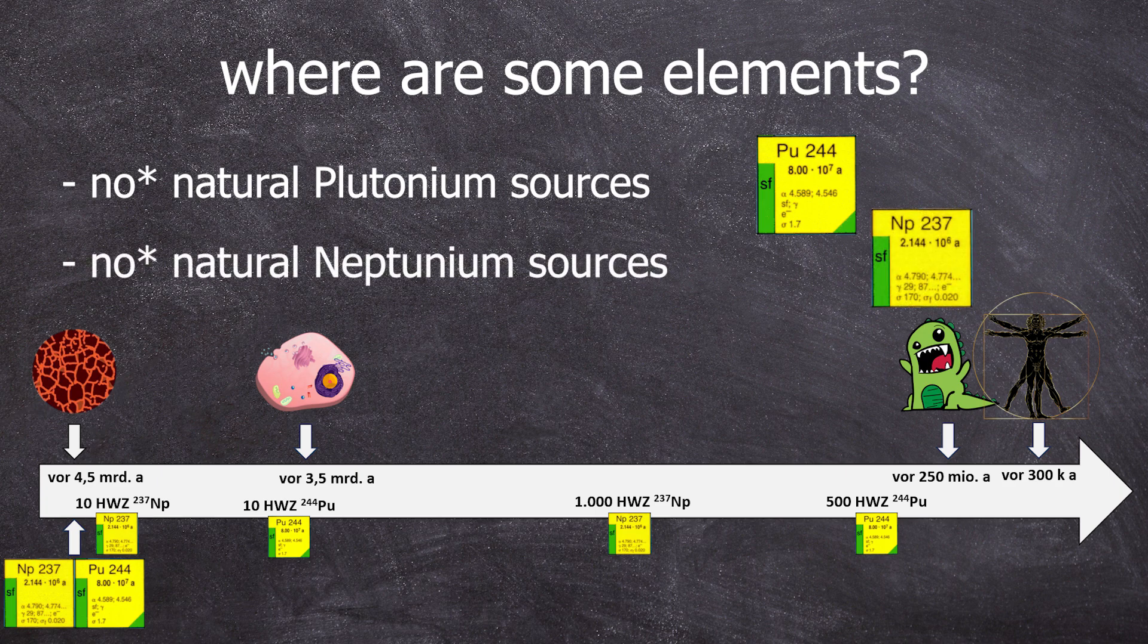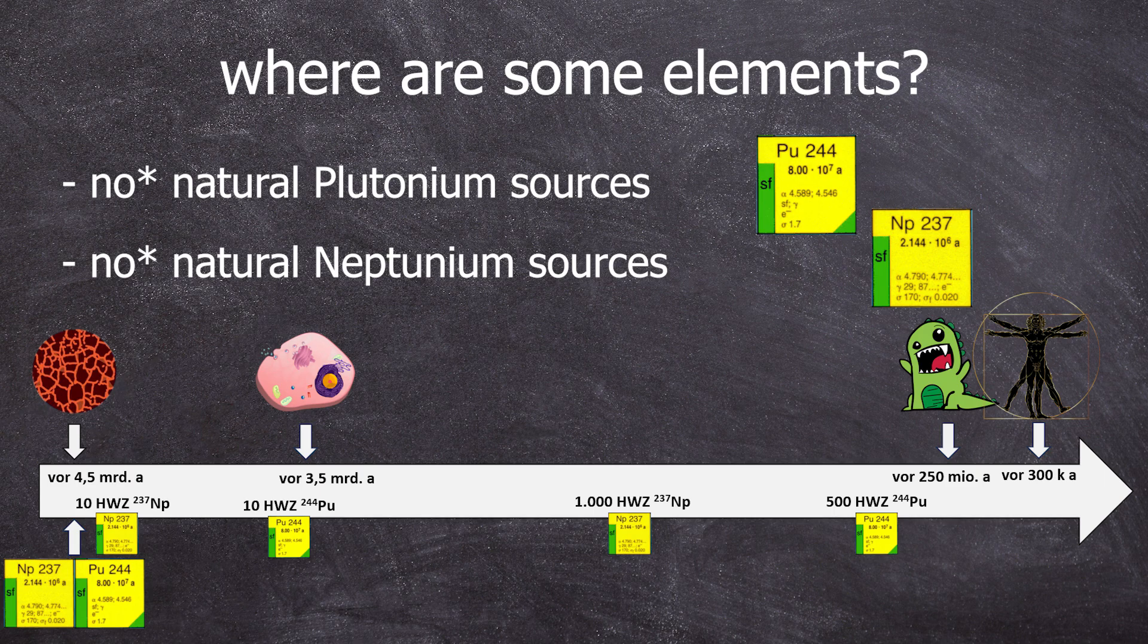Neptunium-237 falls into the same category too. Although its half-life is approximately 2 million years, humans only emerged 4.5 billion years after Earth's formation, so they came a bit late to the party when it comes to exploring elements.